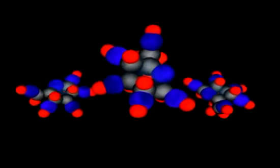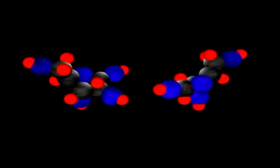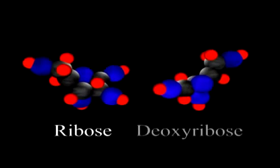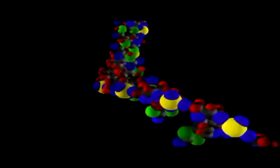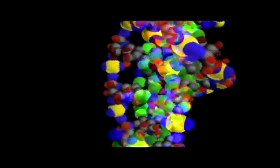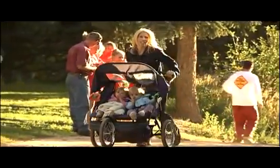Monosaccharides such as glucose and its relatives have a short life span in the cell. Most are broken down to provide energy or linked together by dehydration reactions to form disaccharides or polysaccharides. Two other important monosaccharides are ribose and deoxyribose, each of which have five carbons. The two molecules are identical except that, as the prefix deoxy implies, deoxyribose molecules have one oxygen less than ribose molecules. Ribose and deoxyribose form critical parts of RNA and DNA molecules respectively. RNA and DNA are critical in passing the blueprints of life from cell to cell and from generation to generation.